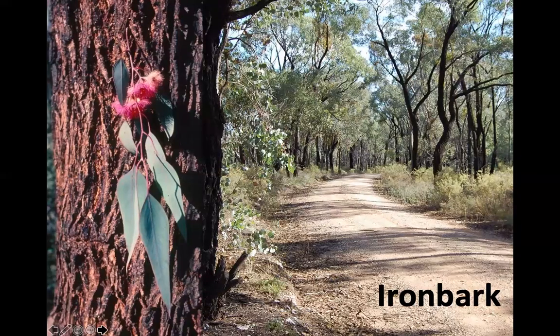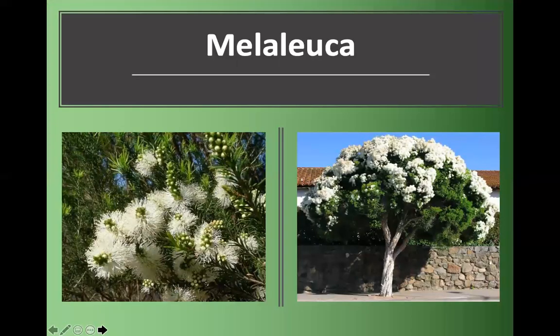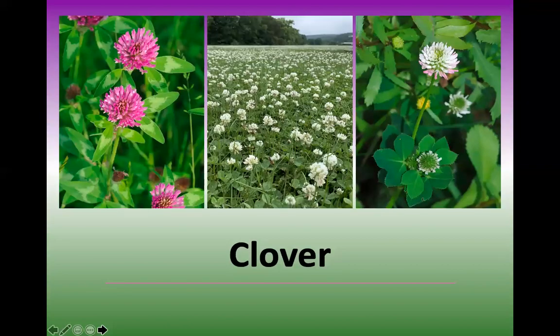Around our streets in Werribee and Wyndham in Western Victoria you might have seen the ironbark, which has a very dark bark and has red flowers as well as white flowers. It's a really important one coming out of winter at the start of spring. Not to be confused with a tea tree is the melaleuca, which is the paperbark. It comes out around Christmas time and the bees absolutely love it. A lot of people confuse the melaleuca for tea trees. Then clover — red and white clover.